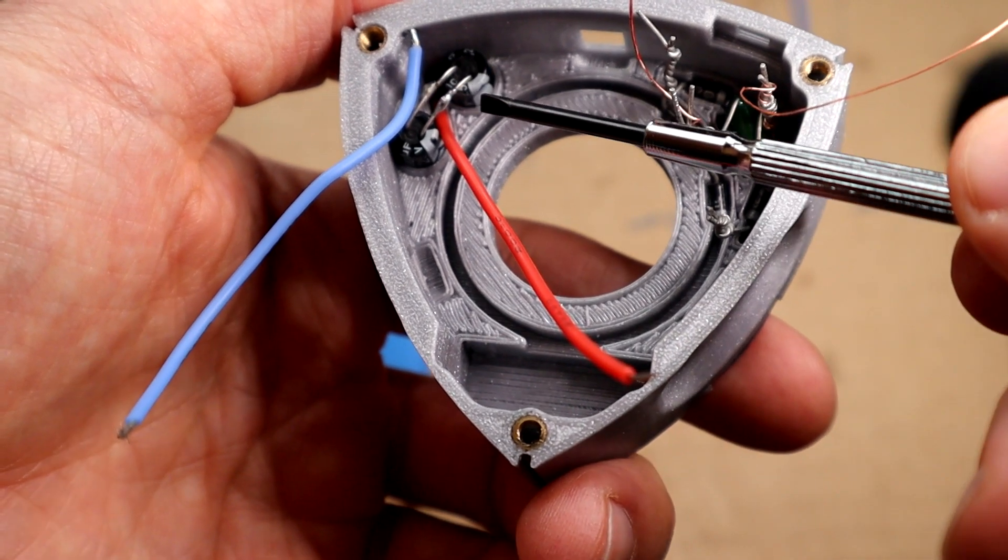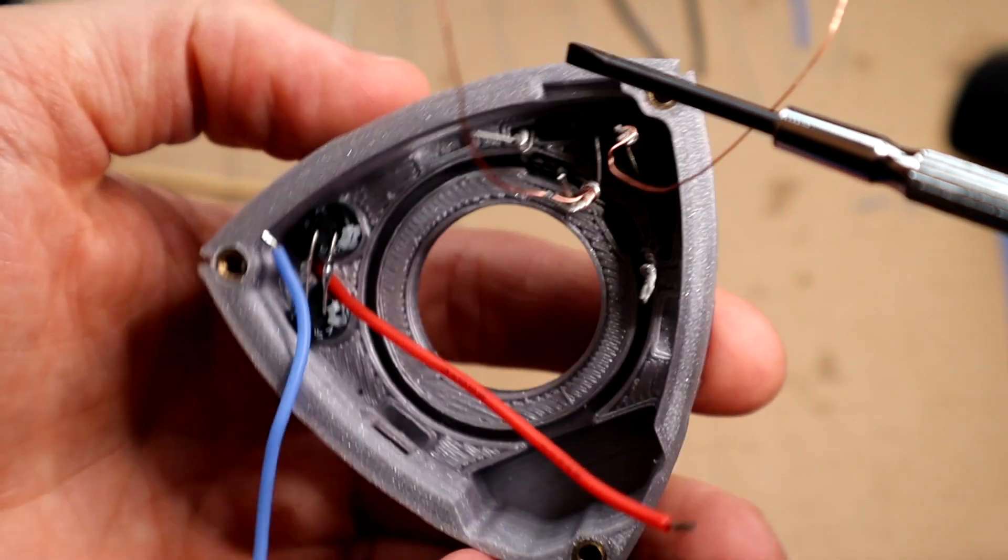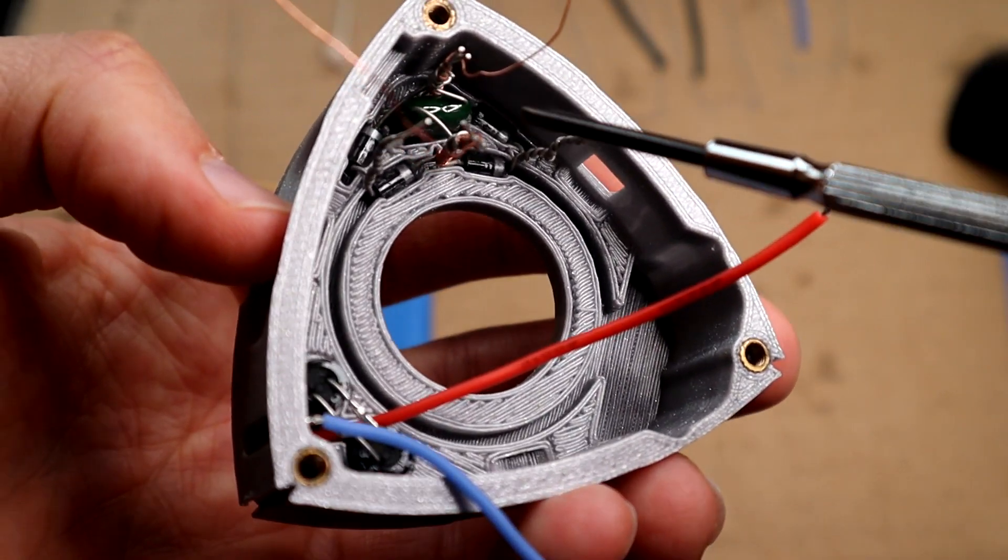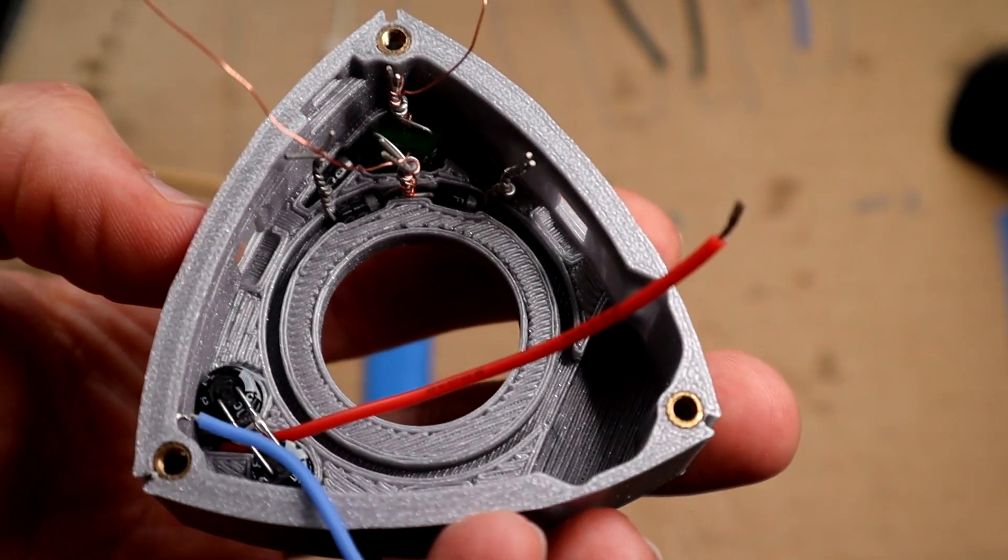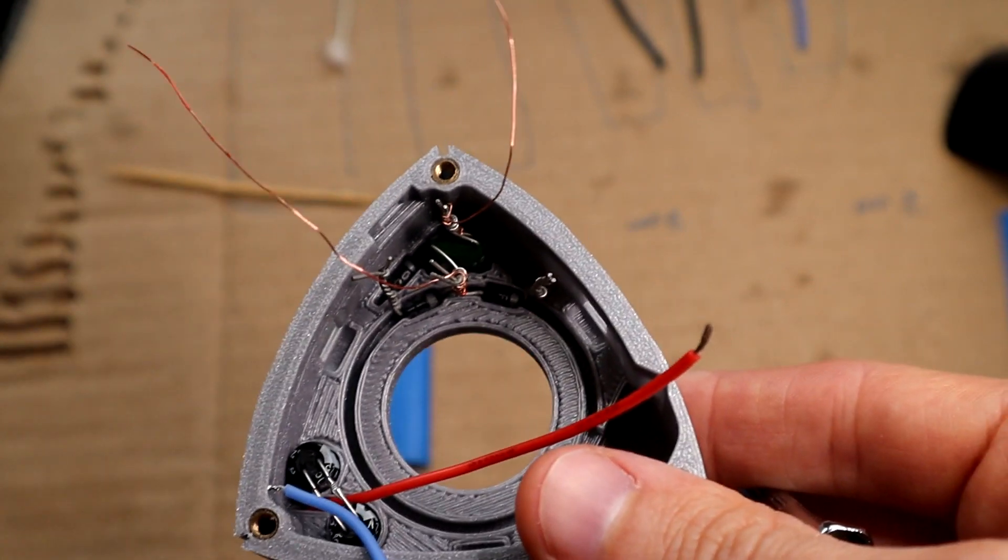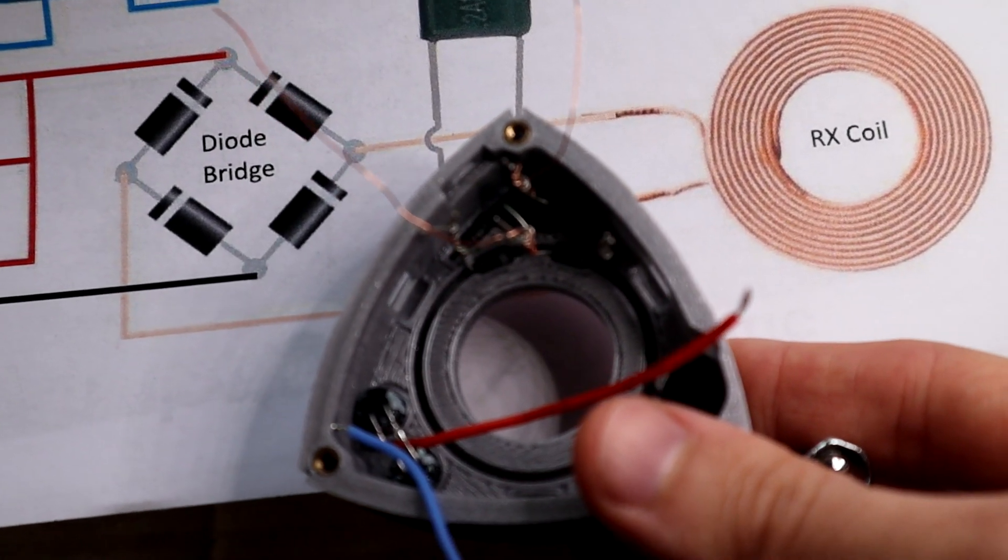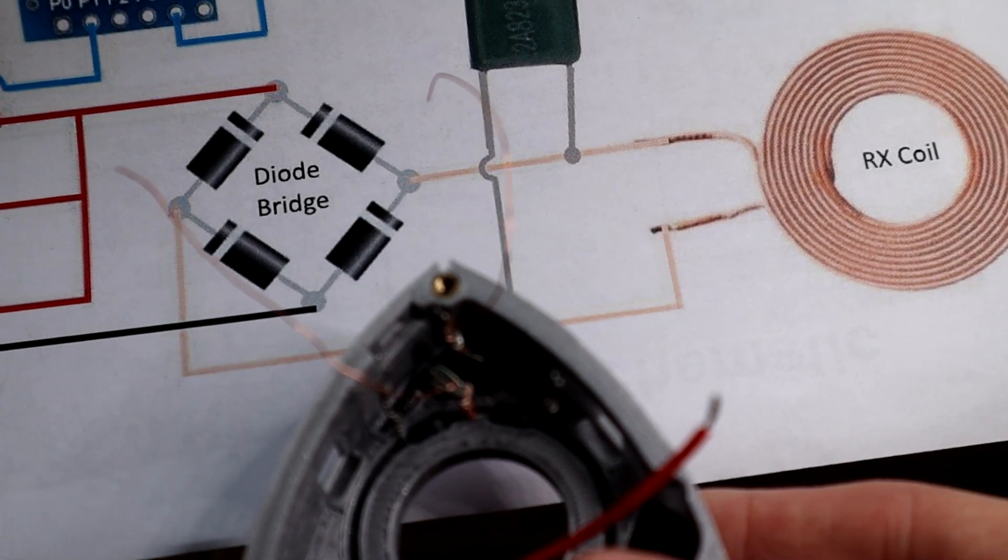Now, when it comes to the bridge diode here, he also has this reversed from the schematic here. It looks different. And this matters. This depends on where you're putting your positive and negative on your diode bridge. So what you need to do is twist it 90 degrees if you want to do it this way.